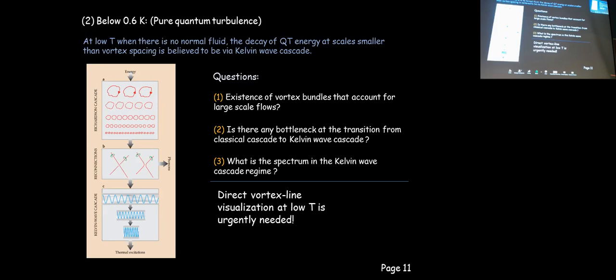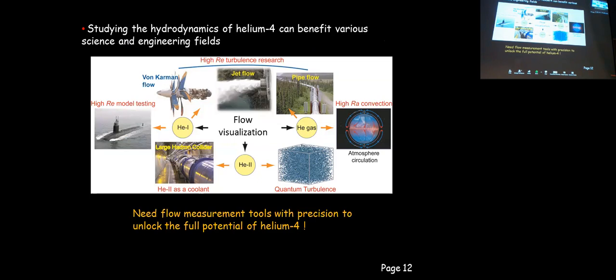Puzzles remain — for instance, large-scale flows presumably require vortex bundles, but can we actually see those bundles? Furthermore, there is a transition from large-scale hydrodynamic turbulence to wave turbulence at small scales — could there be a bottleneck for energy transfer? I hope this brief introduction has convinced you that it's interesting to study hydrodynamics in superfluid helium. If one can develop quantitative measurement tools, we can probably better understand the hydrodynamics, which may benefit various scientific and engineering fields.